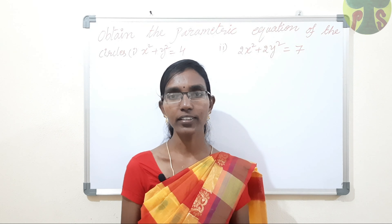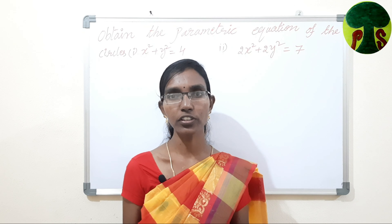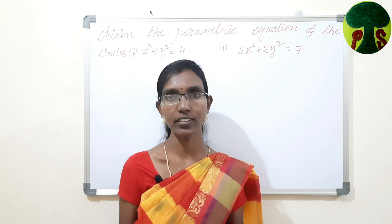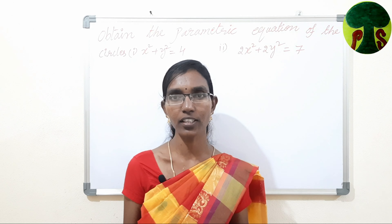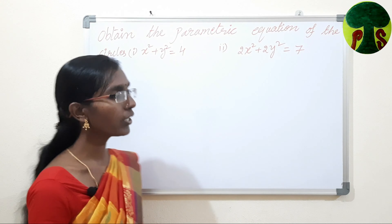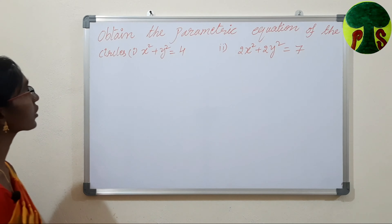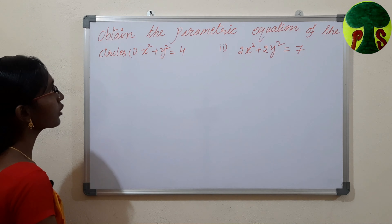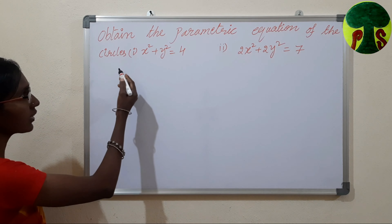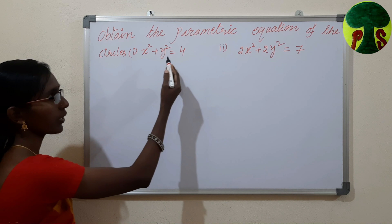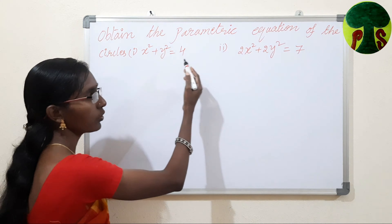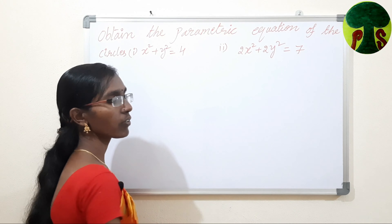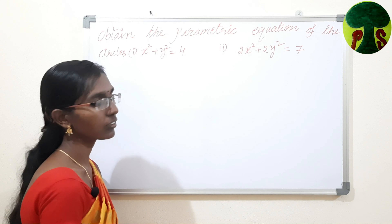Hello everyone. In this video, we are going to discuss exercise 1A in circles. This is the continuation to the previous video. Here is the question: obtain the parametric equation of the circles x squared plus y squared equals 4, and 2x squared plus 2y squared equals 7.